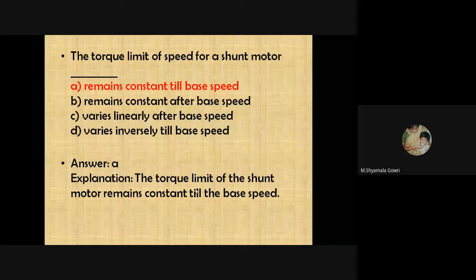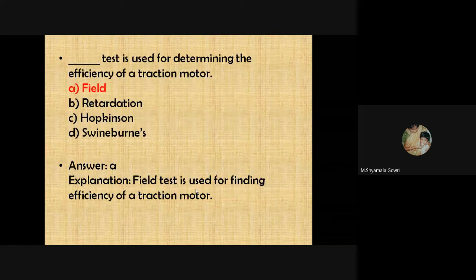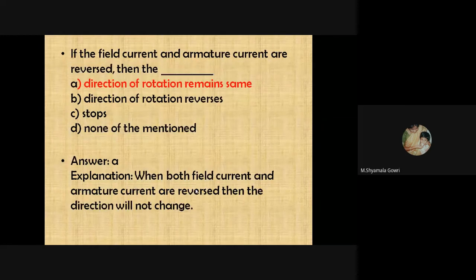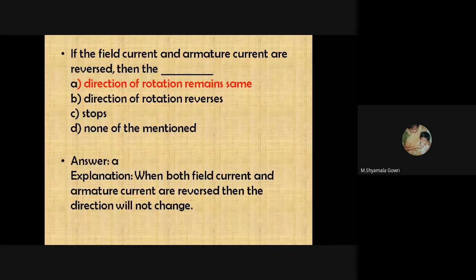The torque limit of a shunt motor remains constant until base speed. The field test is used for determining the efficiency of a traction motor. If both the field current and armature current are reversed, the direction of rotation remains the same. However, if only one of them is reversed, the direction of rotation of the machine will be reversed.